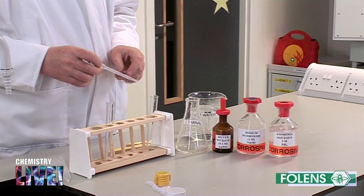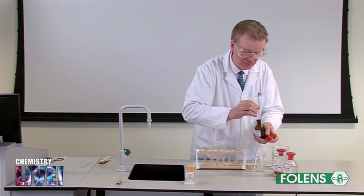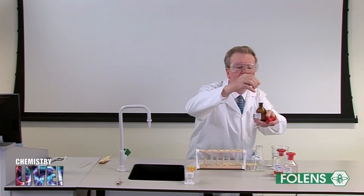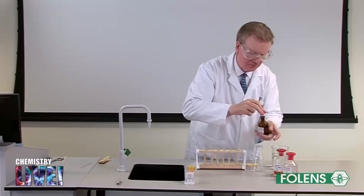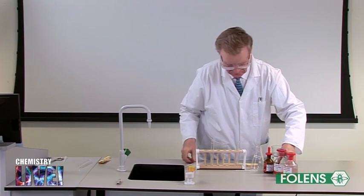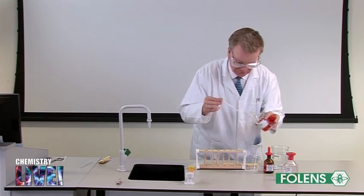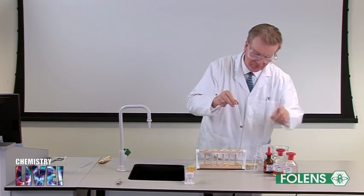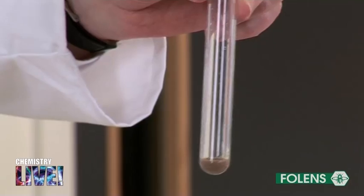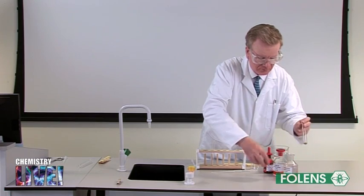Part C: Reaction of ethanol with ammoniacal silver nitrate — the silver mirror test. To one centimetre cubed of a solution of silver nitrate, add one drop of dilute sodium hydroxide solution. A brown precipitate of silver oxide is formed.